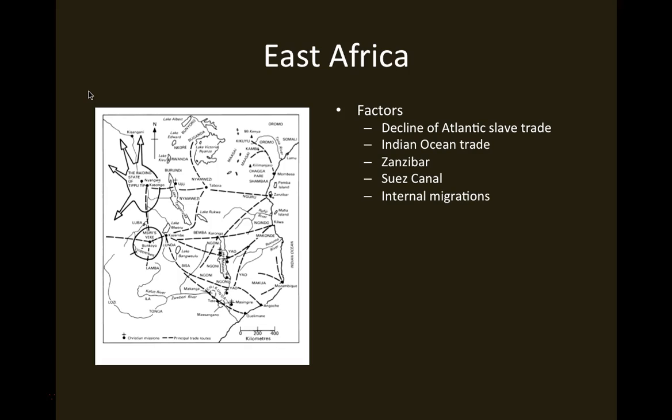As the transatlantic slave trade declined and the British began to patrol the waters of the Atlantic trying to catch slave ships — trying through military means to bring about this moral purpose — the Portuguese moved part of their operation to the east and began to deal in slaves from East Africa. Around the 1820s, Britain secured permission from parliament to patrol the waters of the Indian Ocean and arrived at international treaties that allowed them to do that, even trying to patrol this area.